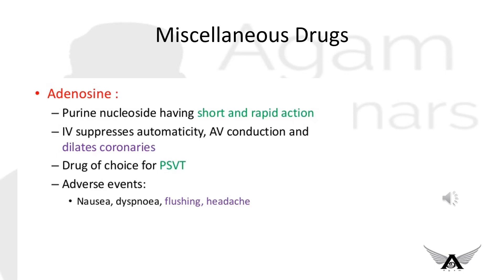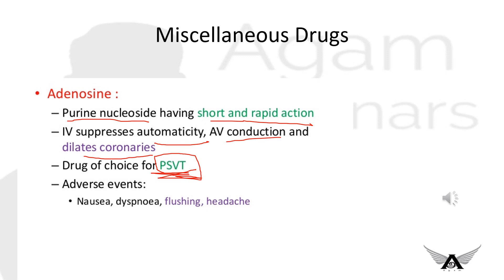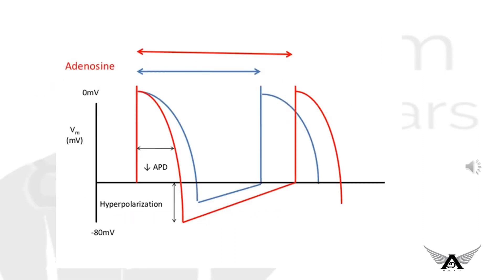Adenosine is a miscellaneous drug. It is a purine nucleoside with short and rapid action when given IV. It suppresses automaticity and AV conduction and also dilates the coronaries. It is the drug of choice for PSVT. Adverse effects are nausea, dyspnea, flushing, and headache. When adenosine is given, it decreases the action potential duration and causes hyperpolarization.